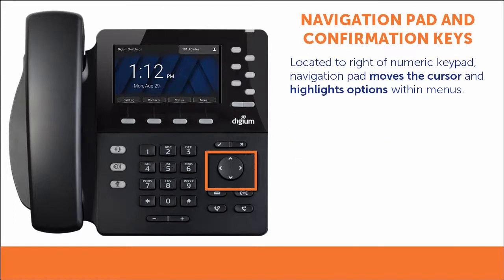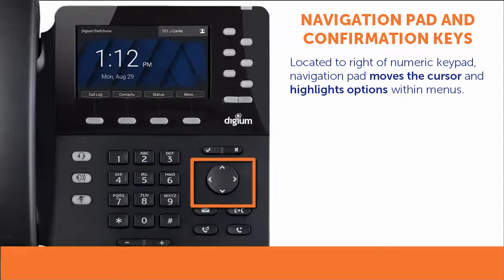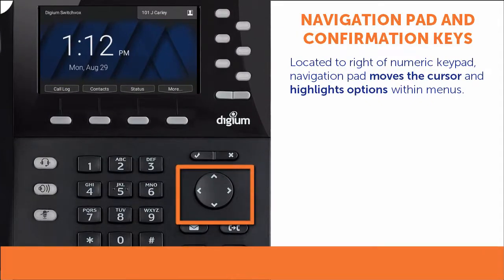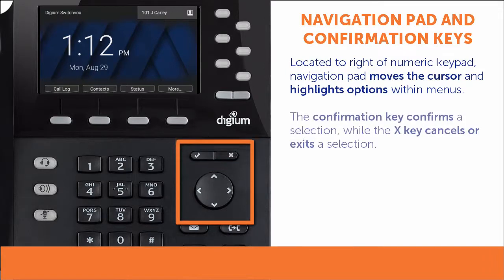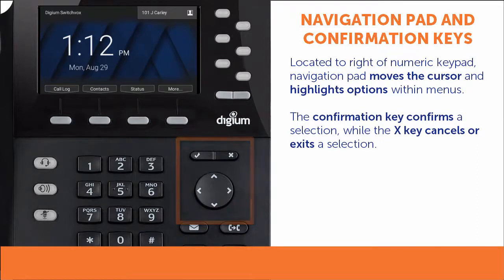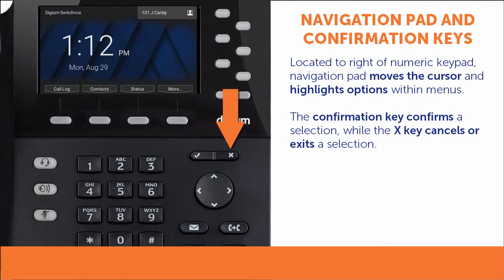A four-way navigation pad is located to the right of the numeric keypad. It allows you to move the cursor and highlight options within the phone's menus. Above the navigation pad are the confirmation and X keys. In most cases, the confirmation key is used to confirm a selection, and the X key is used to cancel or exit.